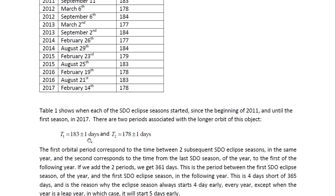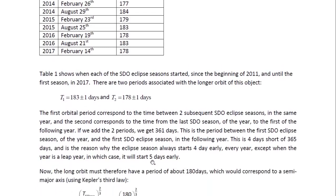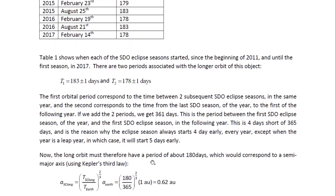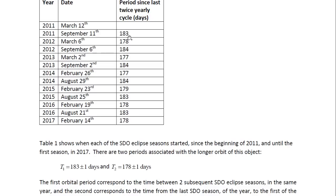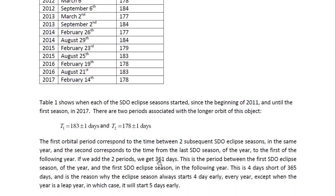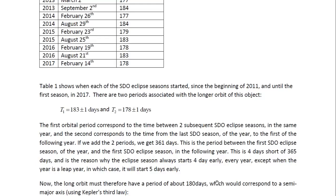One period is 183 plus or minus 1 days, and the next is 178 plus or minus 1 days. The first orbital period corresponds to the time between two subsequent SDO eclipse seasons in the same year, and the second corresponds to the time from the last SDO season of the year to the first of the following year. If we add the two periods — 183 and 178 — we get 361 days. This is the period between the first SDO eclipse season of the year and the first SDO eclipse season in the following year, which is four days short of 365. This is therefore why the eclipse season always starts four days earlier every year, or five days early in a leap year.